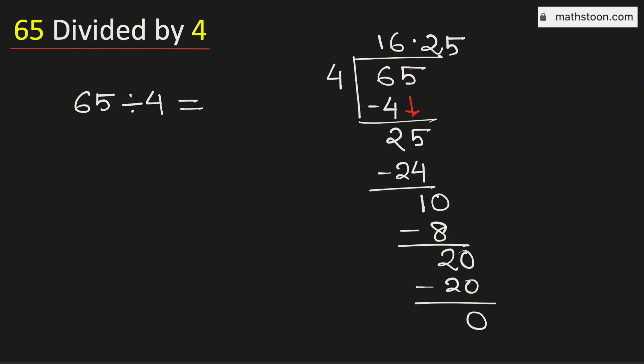Therefore, 65 divided by 4 is equal to 16.25. And this is our final answer.